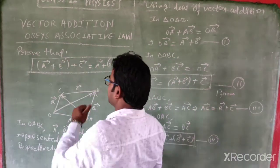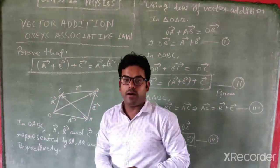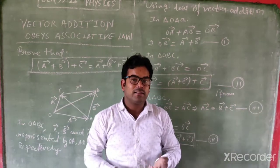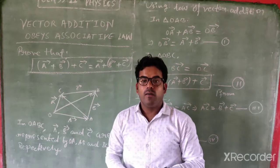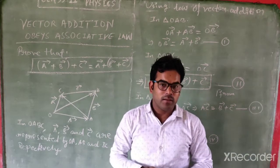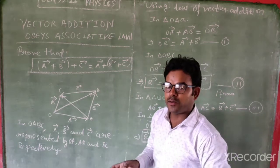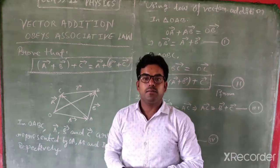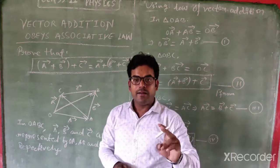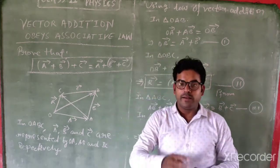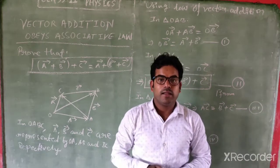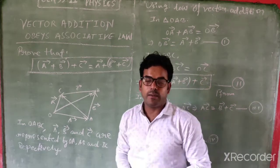What is associative law? You have learned from class 6th, 7th and 8th where bracket of A plus B plus C is equal to A plus bracket of B plus C. That means, if we add 3 numbers in different orders, then there is no change in the sum of those numbers.